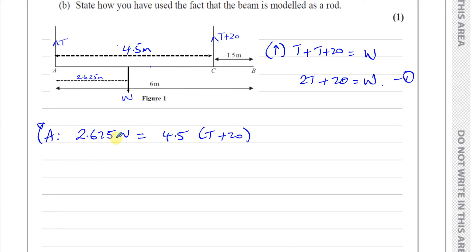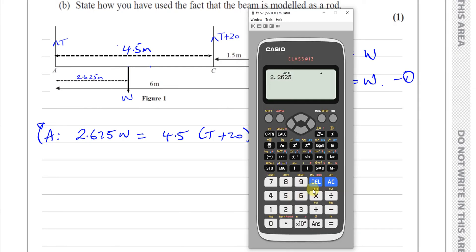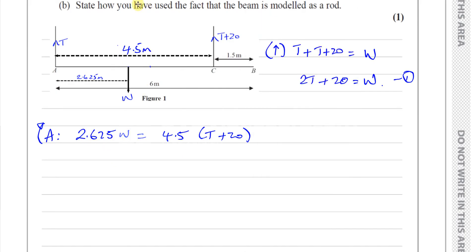Yeah, so let's just see what happens when we do that. So we have 2.625 times 8. That's 21. So that's 21W is equal to 4.5 times 8. That's 4 times 8 is 32. And 8 times 0.5 is 4. That's 36.